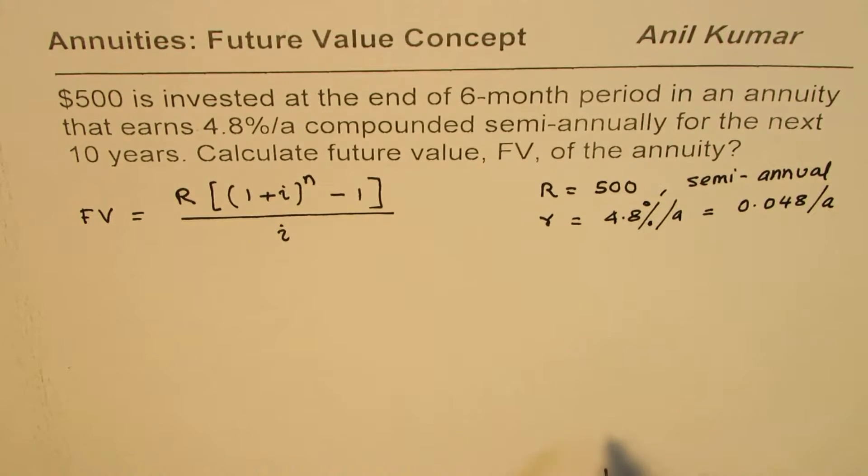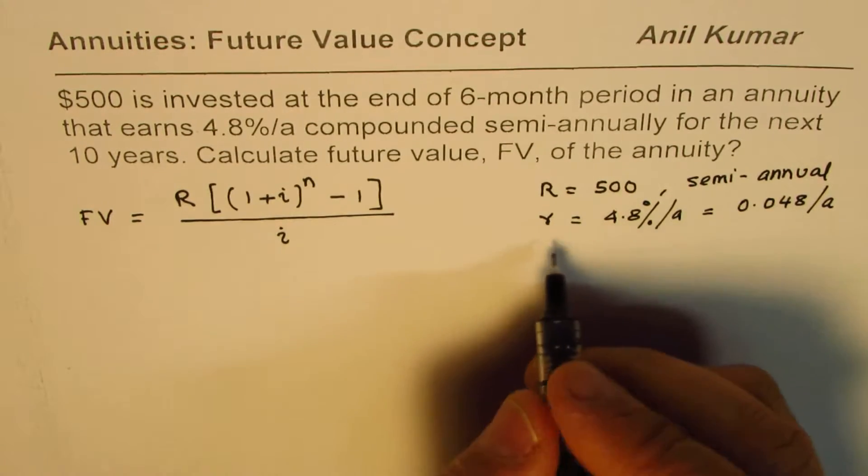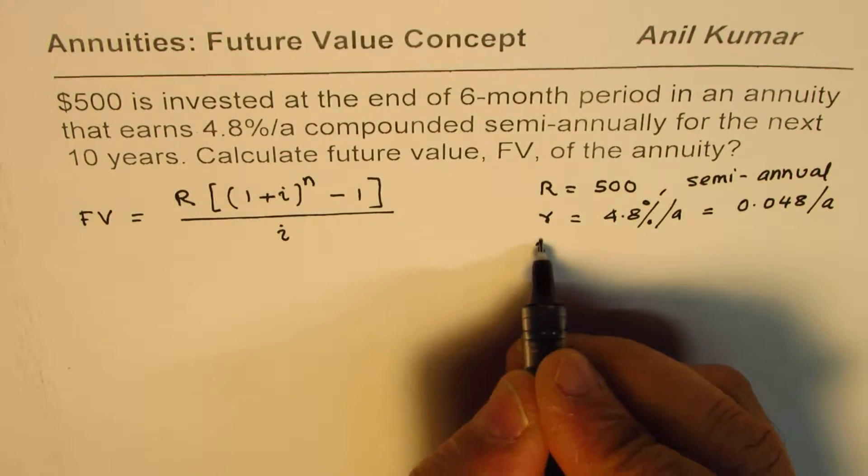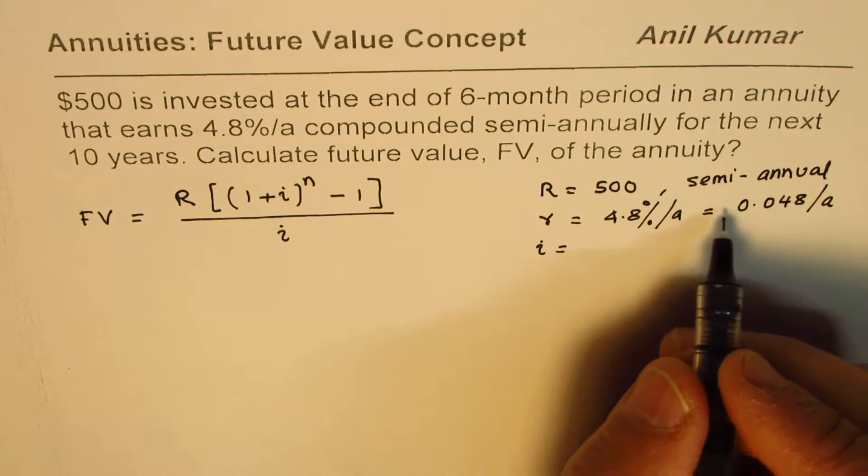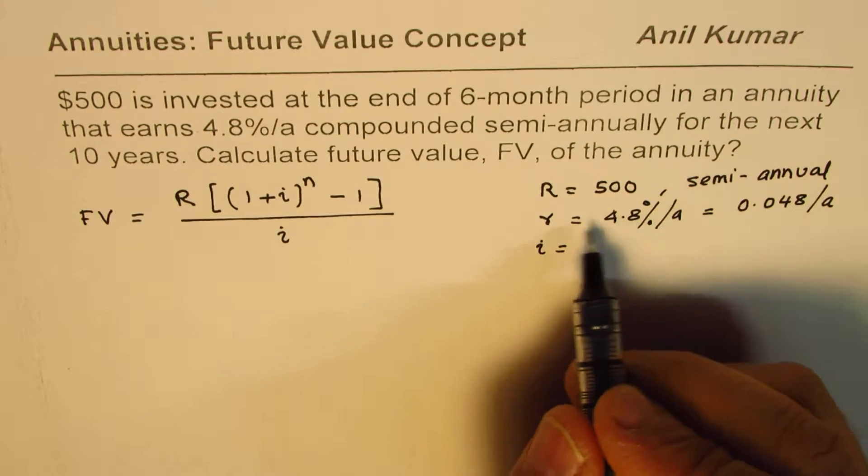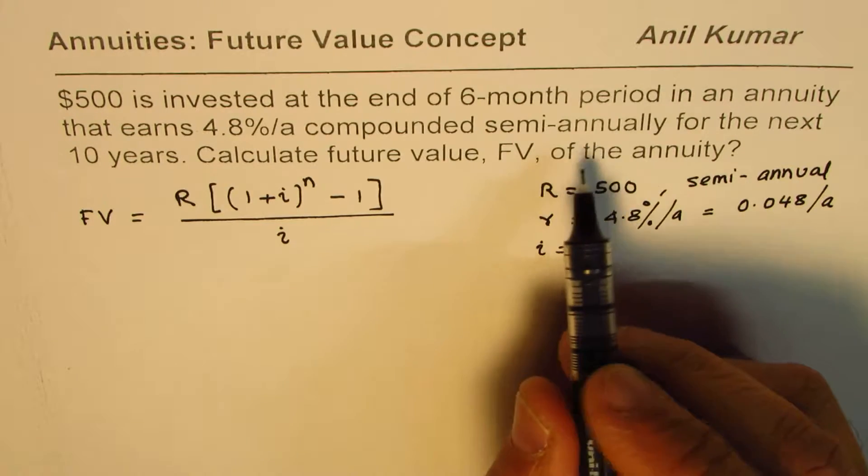Now in terms of i, interest in compounding period of semi-annual, that means half of this because in one year twice we have to do the calculation for compounding the interest. So it'll be 0.048 divided by 2, so we get 0.024.